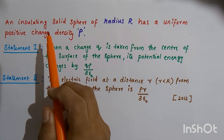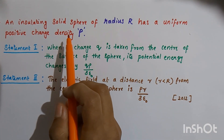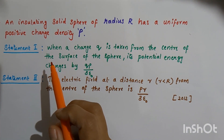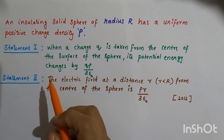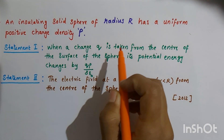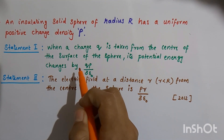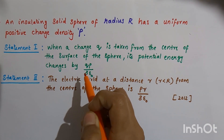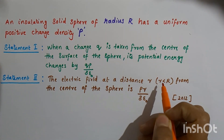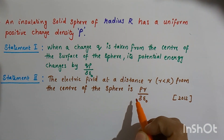The question is: an insulating solid sphere of radius R has a uniform positive charge density rho. There are two statements and we want to determine which one is correct. Statement 1 is: when a charge Q is taken from the centre to the surface of the sphere, its potential energy changes by Q rho by 3 epsilon 0. Statement 2 is: the electric field at a distance r, where r is less than capital R, from the centre of the sphere is rho r by 3 epsilon 0.